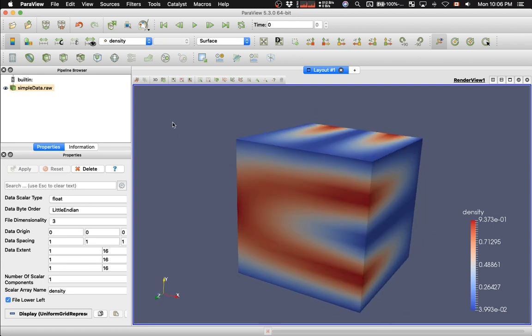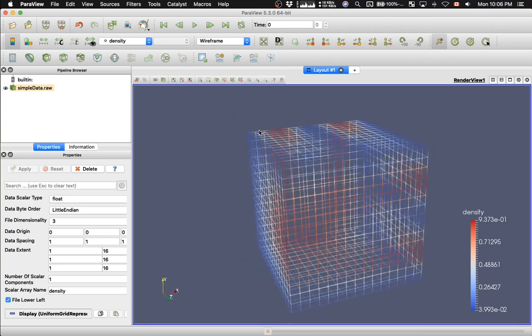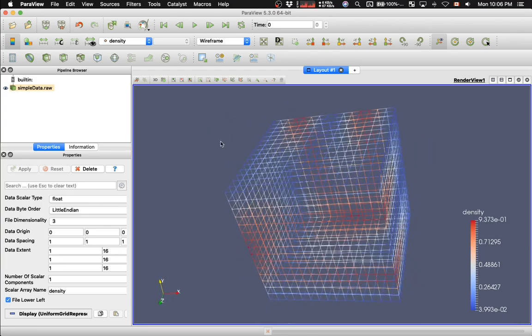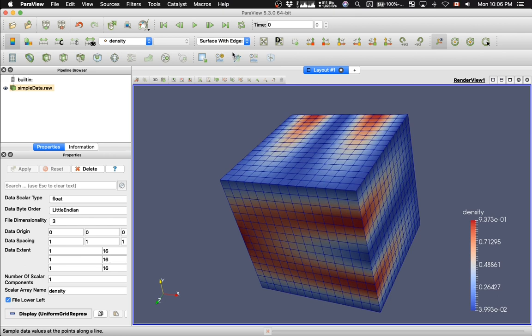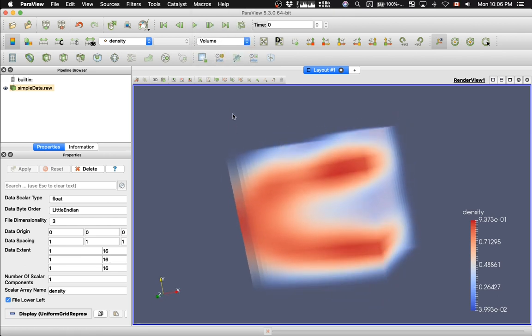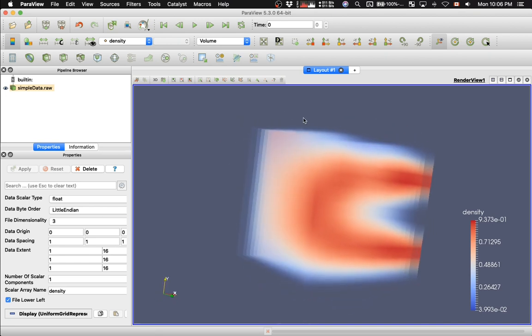So here it is. Let me switch from surface to wireframe view. Here we go. Let me switch to surface with edges view. Let me switch to a volumetric view. So this is raytracing through the volume. And you can see the function quite nicely.